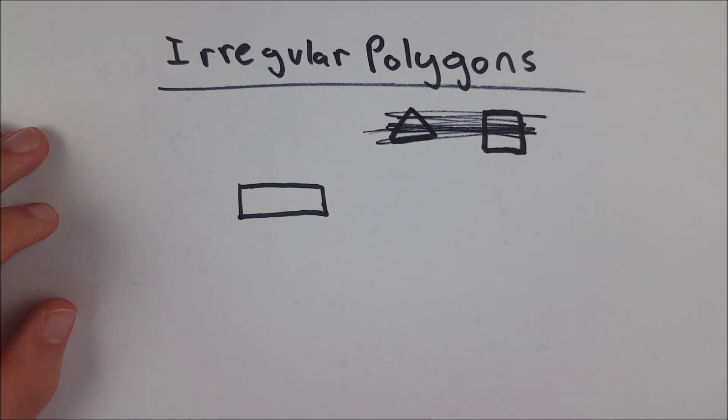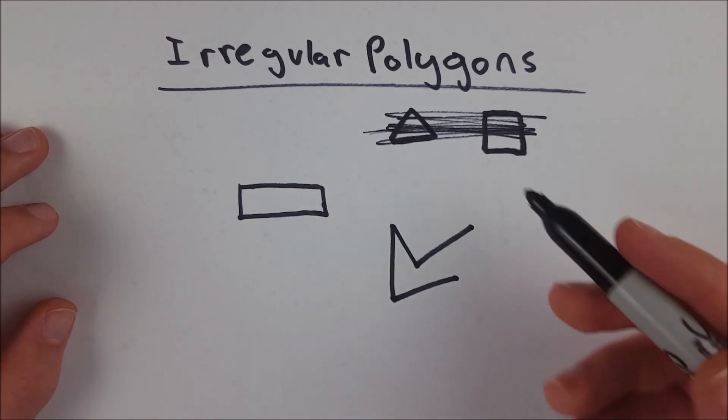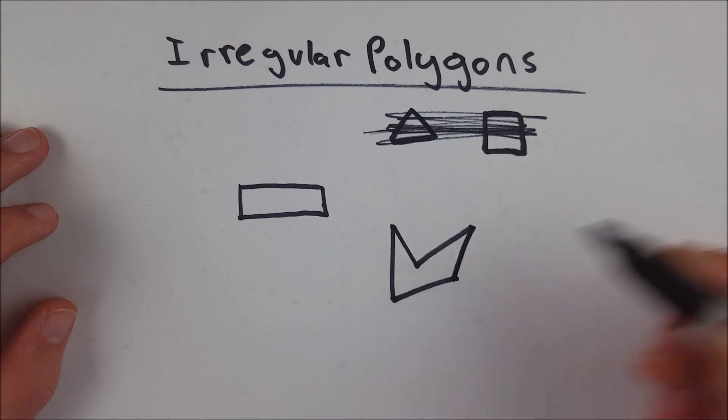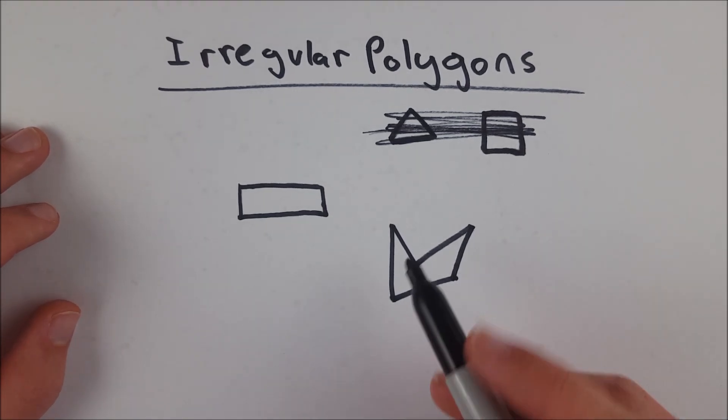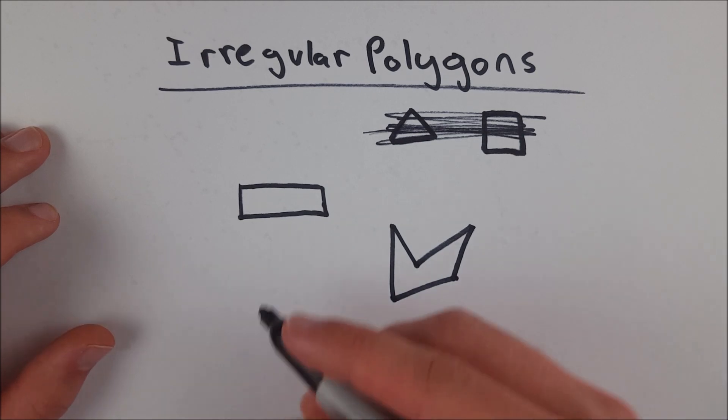A regular polygon cannot be concave. It has to be convex. But an irregular polygon can be concave, so it can look something like this, for example. But you will never see a regular polygon that looks like this. This is an irregular polygon.